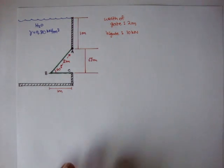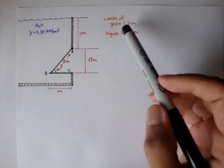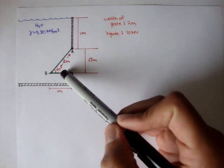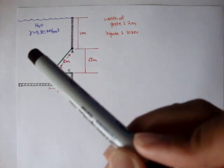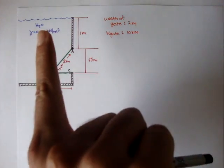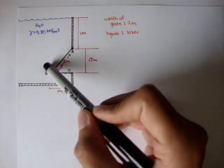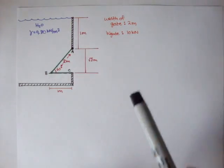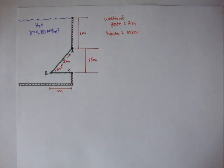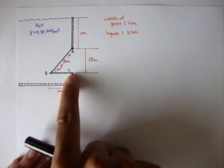The problem gives us that the width of the gate is 2 meters, so this is coming into the camera. It's 2 meters wide. The weight of this piece is 10 kilonewtons, and the problem asks us to find the reaction at C.